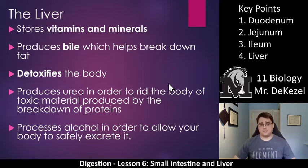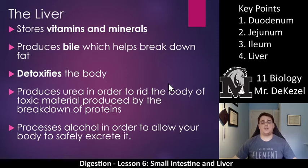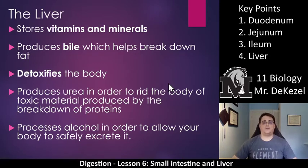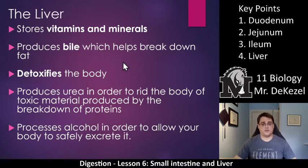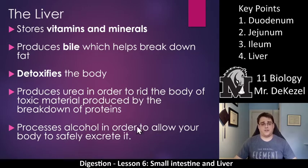The liver stores vitamins and minerals. It produces bile, which is stored in the gallbladder and helps break down fat. The liver detoxifies the body — as the saying goes, you can really do a number on your liver because it detoxifies your entire body. It also produces urea to rid the body of toxic material produced by the breakdown of proteins, making it very complex and vital to digestion and protection from toxins.